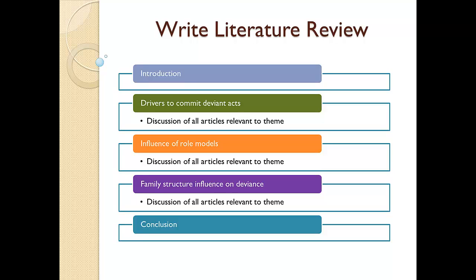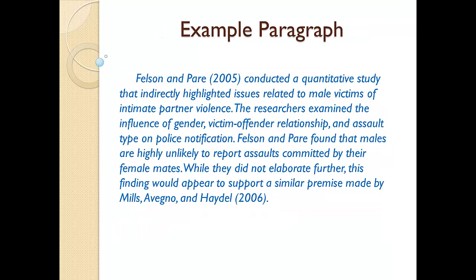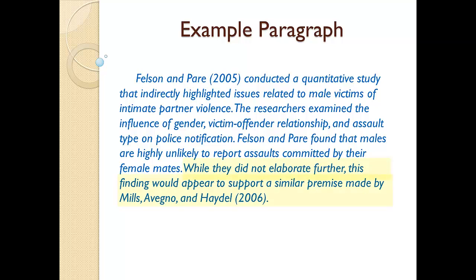Now that I have discussed the concepts, let's look at an example paragraph for a literature review. This is an actual paragraph taken from a literature review that was part of a research study I conducted on intimate partner violence. Let me highlight some of the features to help you understand what you need to include when writing a literature review. You will notice I have succinctly described the type of research that was conducted, highlighted the findings of the study, and demonstrated how this information was relevant to my study. Near the end of the paragraph, I also tied this article to another article I was reviewing.